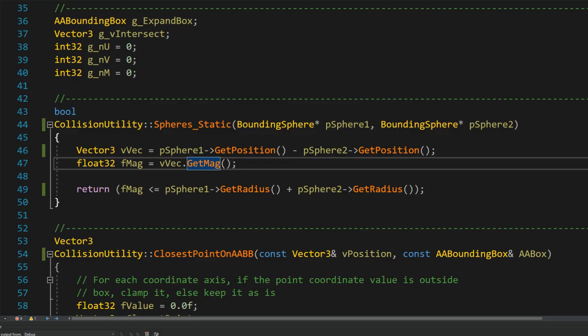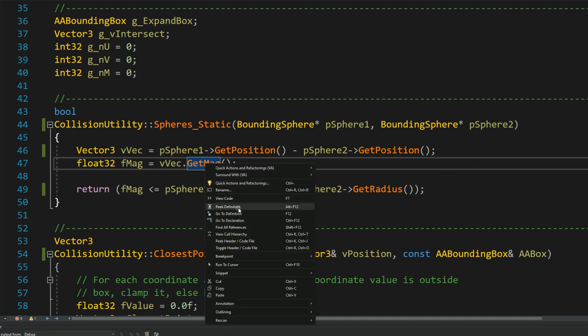To determine the distance between the spheres, we create a vector which is the difference between the positions of the spheres. We then calculate the magnitude of that vector by first performing the dot product operation.